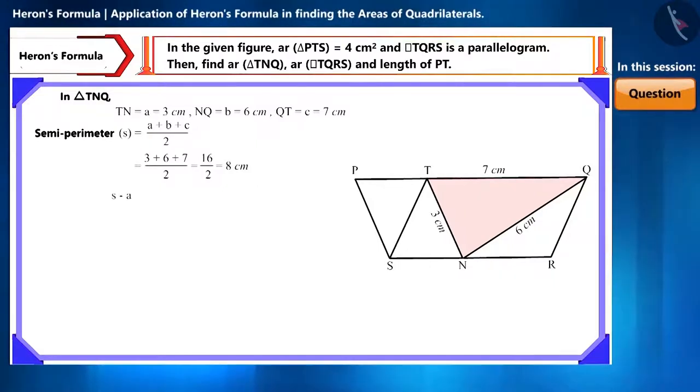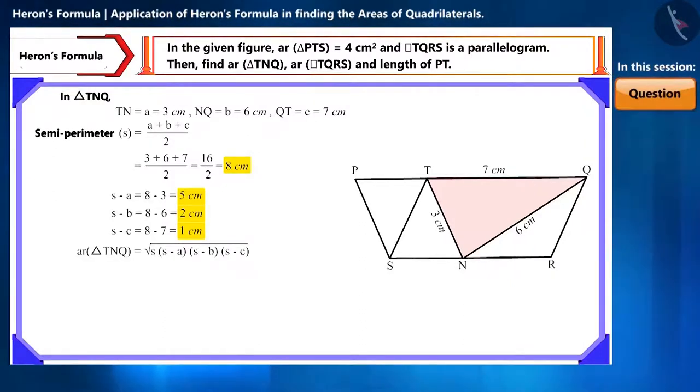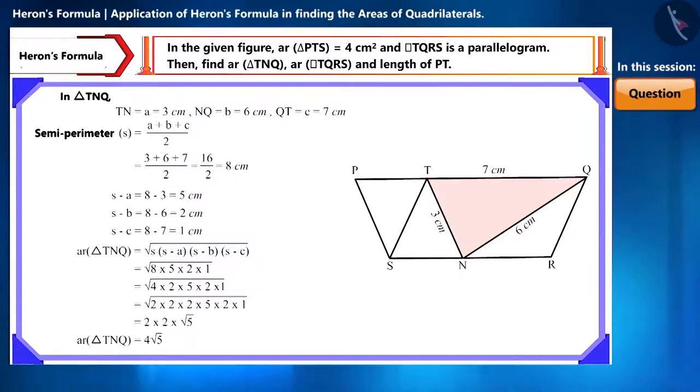Now, we will find the value of S-A, S-B, and S-C within brackets. By substituting the values of all these in Heron's formula, we will solve it. And we will get the area of triangle TNQ as 4√5 cm².